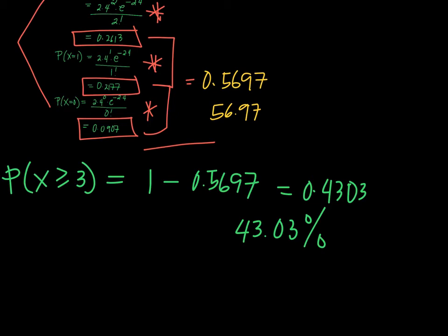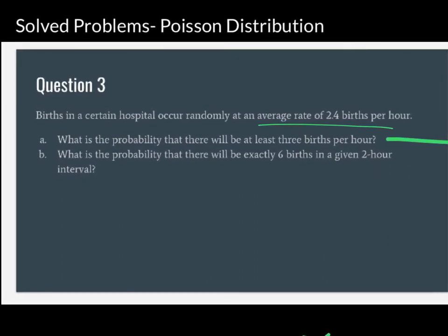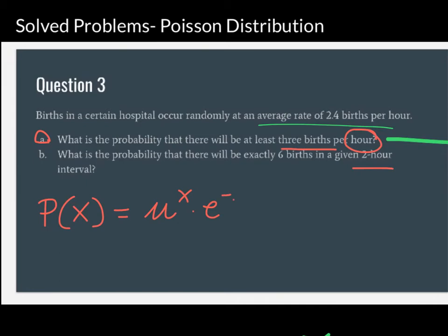Now for part B: what is the probability that there will be exactly six births in a given two-hour interval? The case is now different because the interval is two hours rather than one. We still use the Poisson probability formula, but the mean is no longer just 2.4, since 2.4 is the average per hour. For a two-hour interval, the new mean is 2.4 times 2, which equals 4.8.